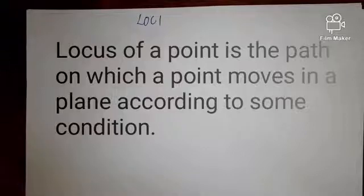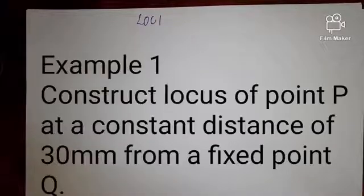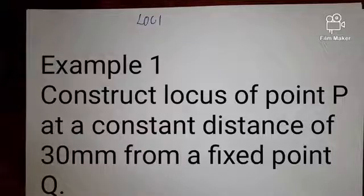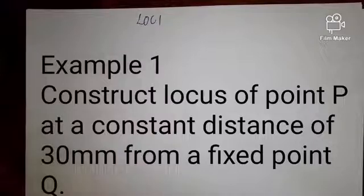Now we are going to go through some samples that will illustrate the locus of a point. For example, you can be asked to construct the locus of a point P at a constant distance of, say, 20 mm or 30 mm from a fixed point Q. So in this case, we are going to have a fixed point Q, and then there is a point P which is moving at a constant distance of, say, 30 mm. How is the path going to look like?